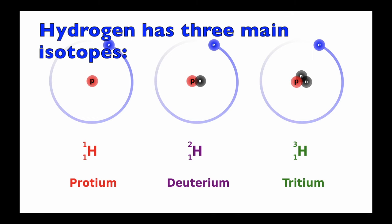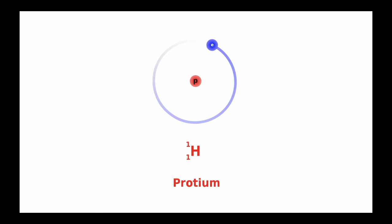Hydrogen, for example, has three main isotopes: protium, which has one proton and no neutrons; deuterium, which has one proton and one neutron; and tritium, which has one proton and two neutrons.